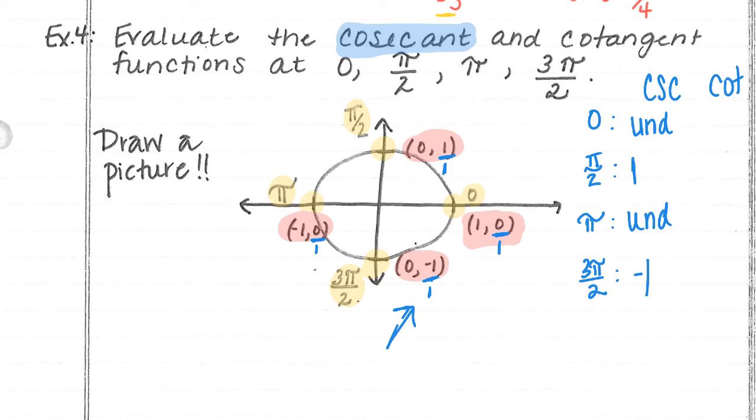Moving on to the cotangent. Remember, cotangent is cosine over sine because tangent is sine over cosine. So I'm going to start at 0: cosine over sine is undefined. Then I have pi over 2: cosine over sine is 0. Cosine over sine is undefined. And cosine over sine is going to be 0.